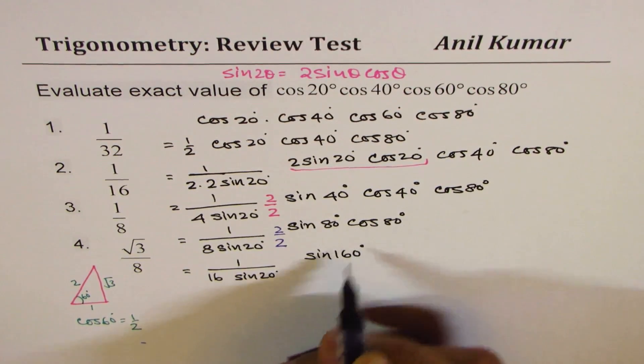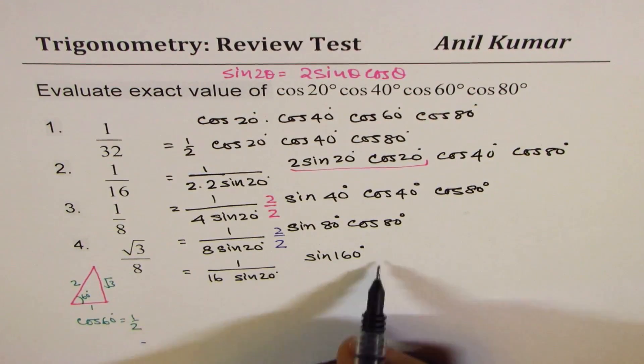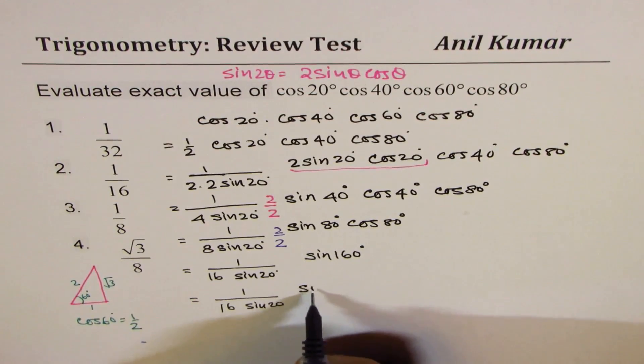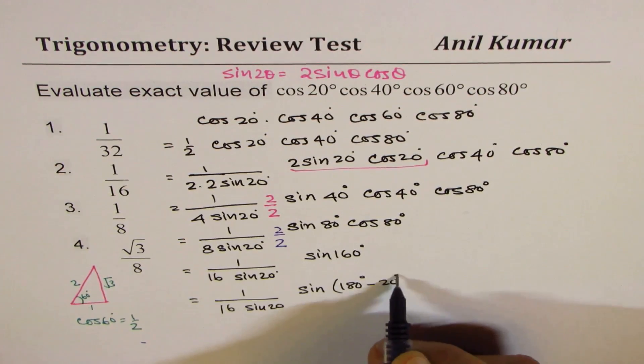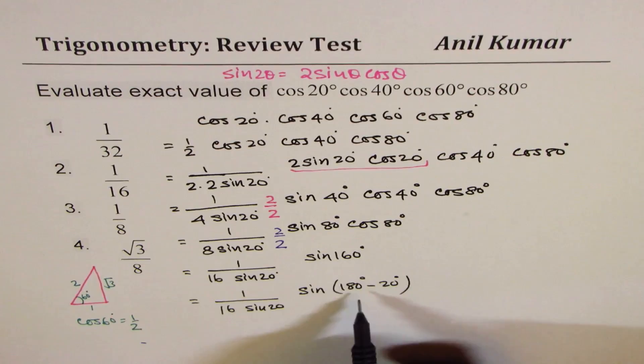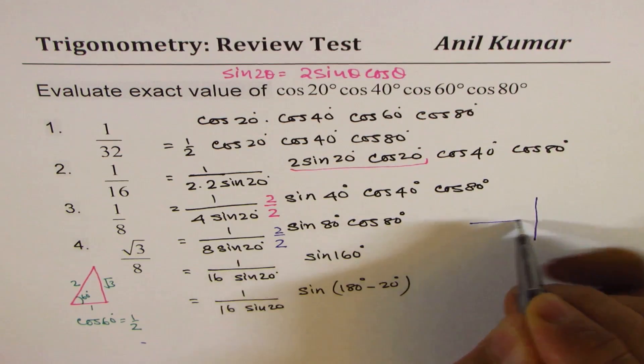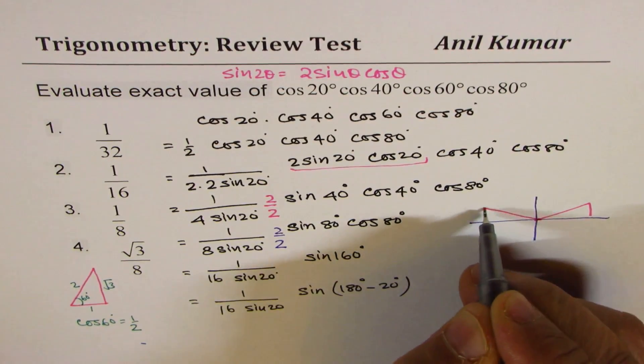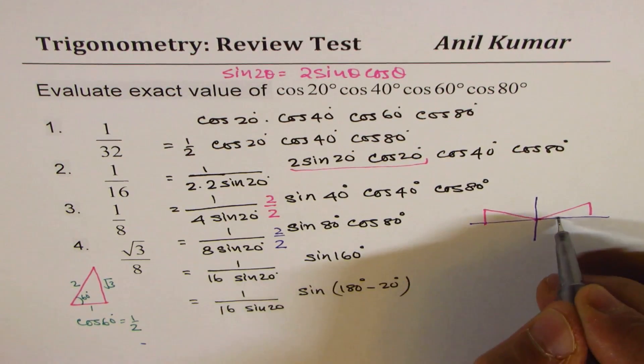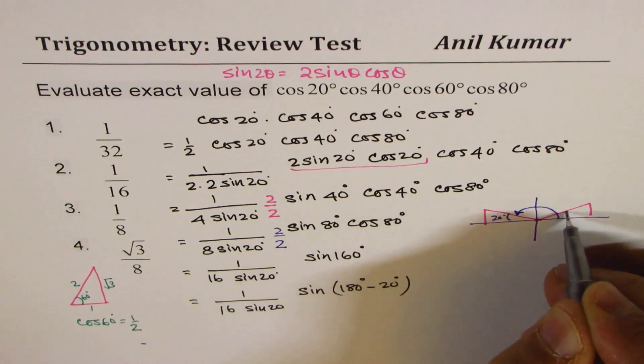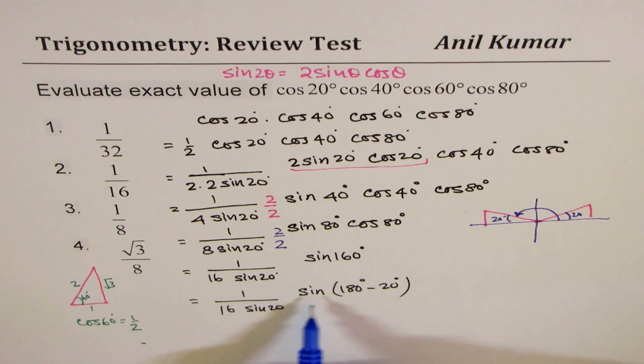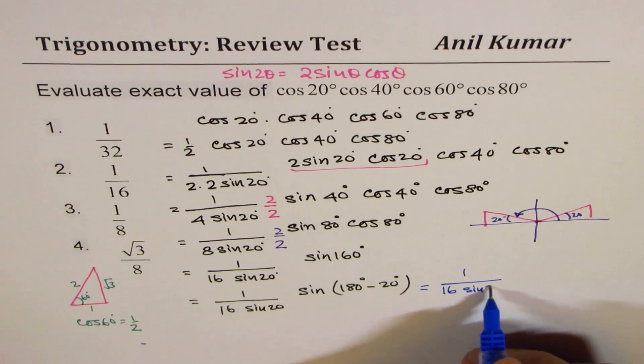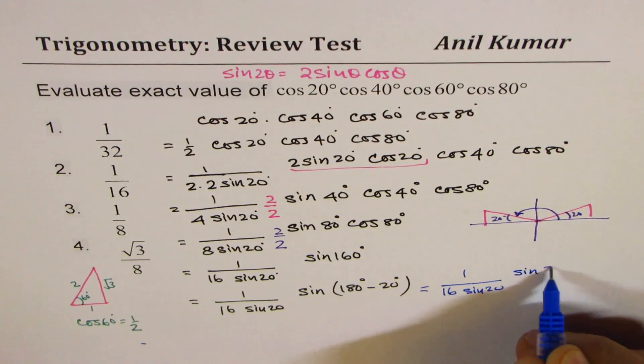Sine of 160° could be written as sine of 180° minus 20°. Using our relation, we have a triangle here. Let's compare these two triangles. When we say 180 minus 20, which is this angle, so this acute angle is 20°, same as here. Clearly we could write sine 180° minus 20° as sine 20°.